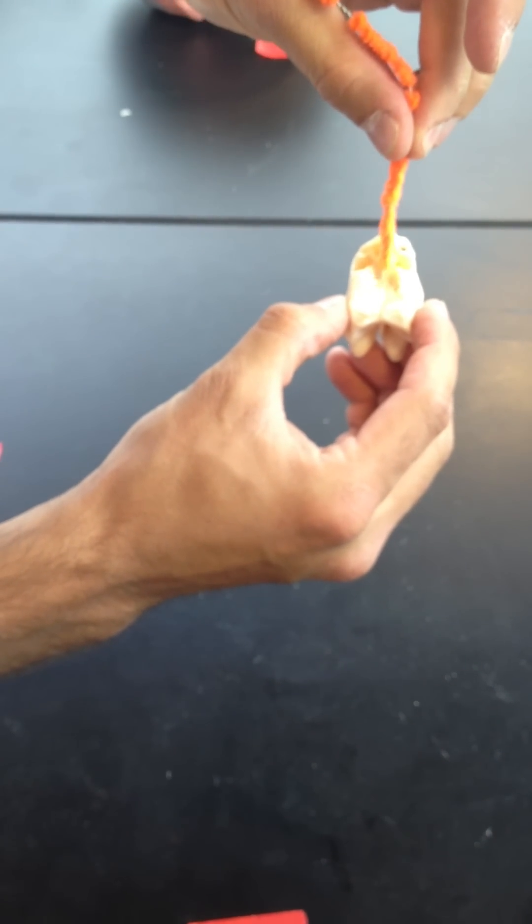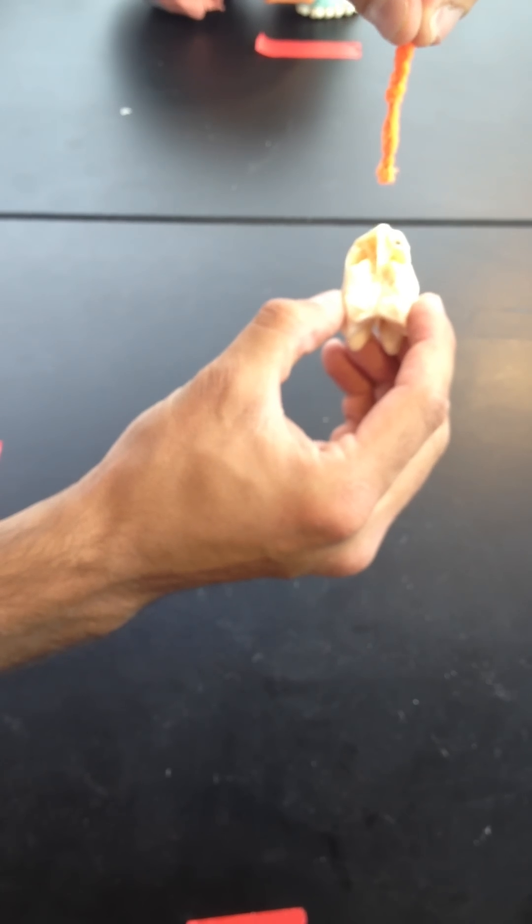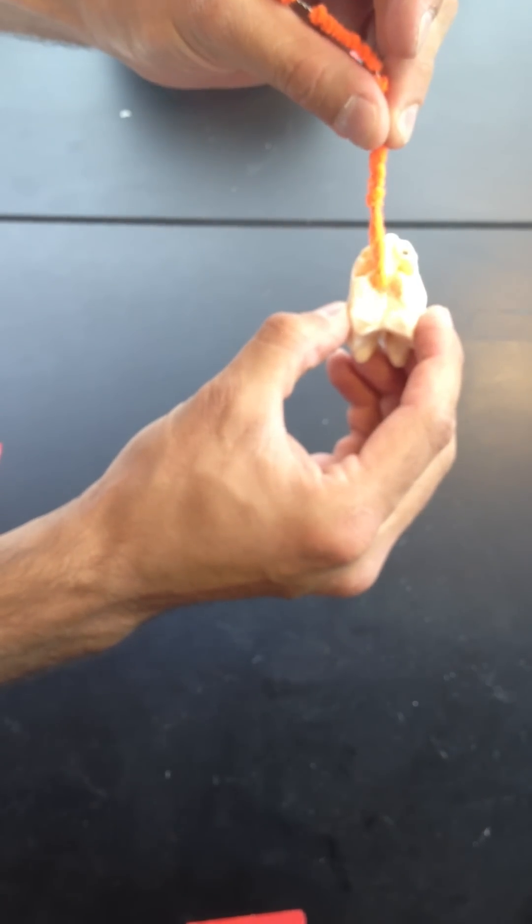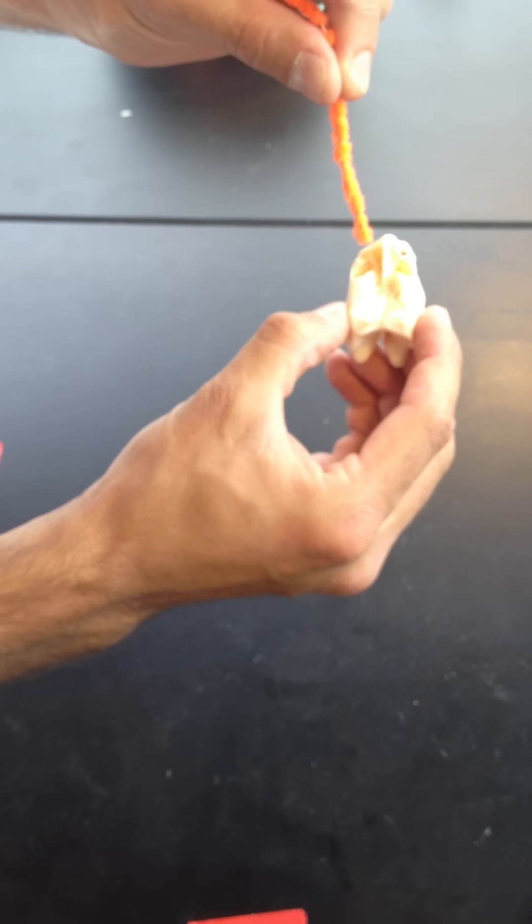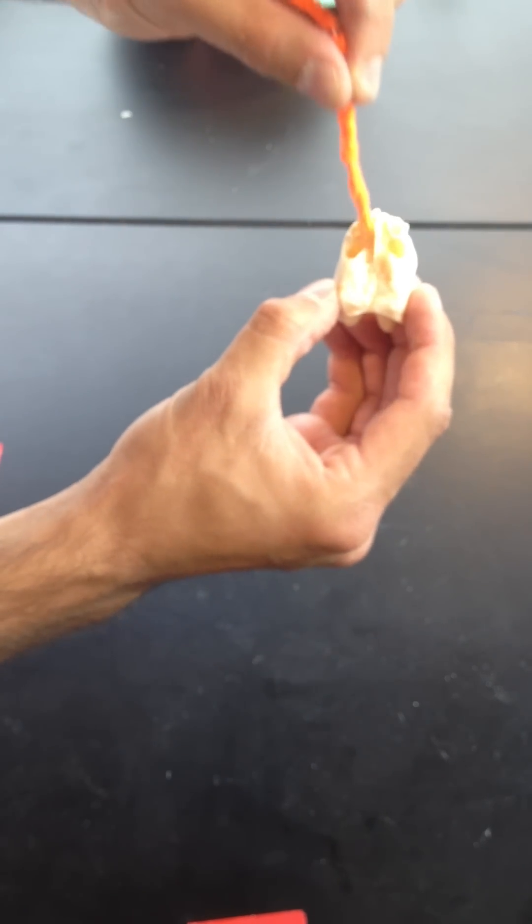So the first thing I will mention is we have the crista galli, which is this rigid spinous structure here. Then we have the cribriform plate, which is on either side, lateral to the crista galli, and in that you will see a bunch of foramina, which are the olfactory foramina.